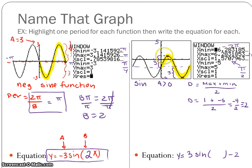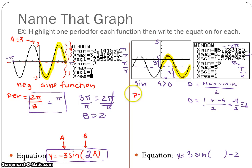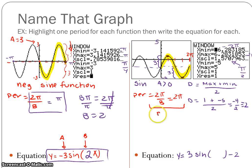So we found a = 3 and d = −2. All we have left is to find the period. Using the period formula 2π over b, my x max is 2π, so the period is 2π. Solving the equation gives b = 1, so it's just x because you don't have to write the 1. That is the equation for the second graph.